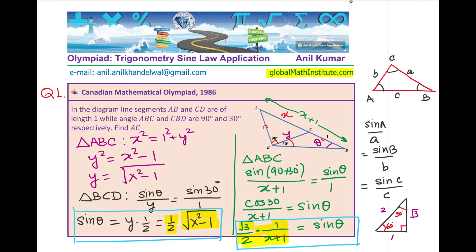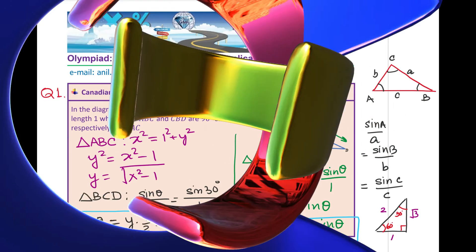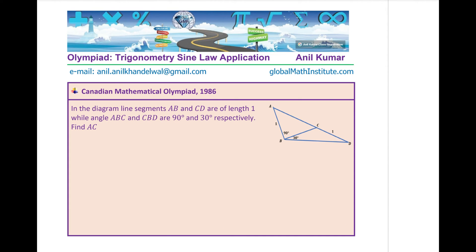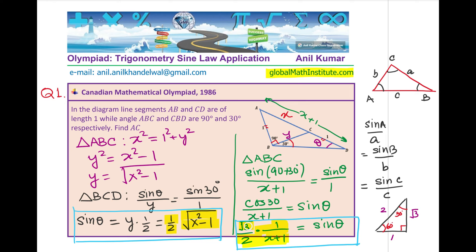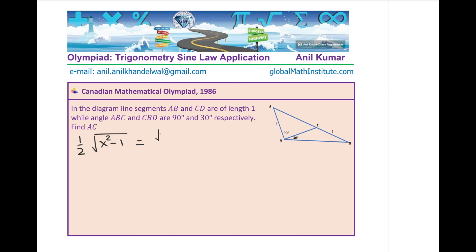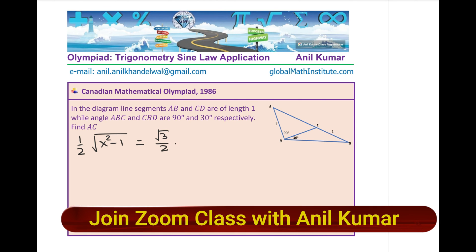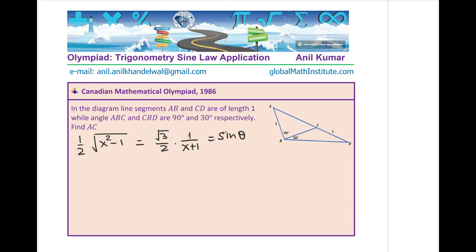So, we are now looking into these two relations which we have just derived for the angle sin theta. I will take it to the next page to solve it further. So, we have half square root X squared minus 1 is equal to square root 3 over 2 times 1 over X plus 1. So, we equated the value of sin theta, correct? Now, we have an equation which is in terms of X only. And therefore, we can easily solve this equation. Let's simplify a bit by cancelling 2's. And we will now cross multiply.